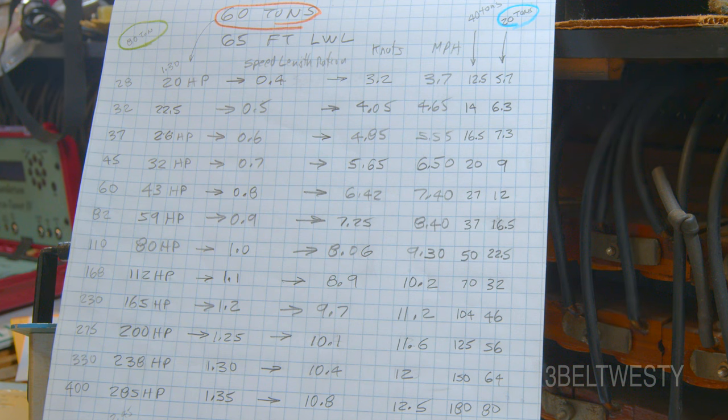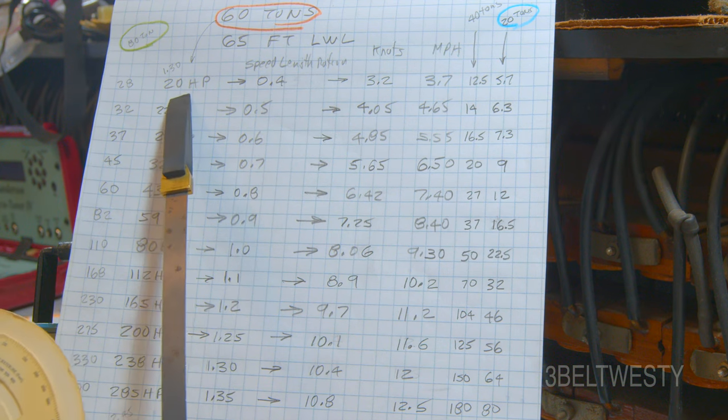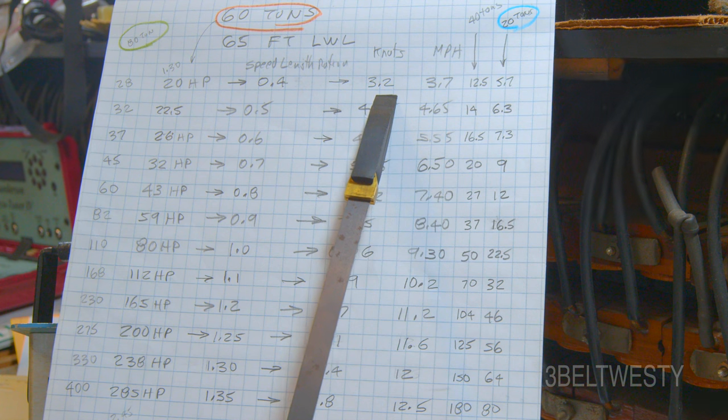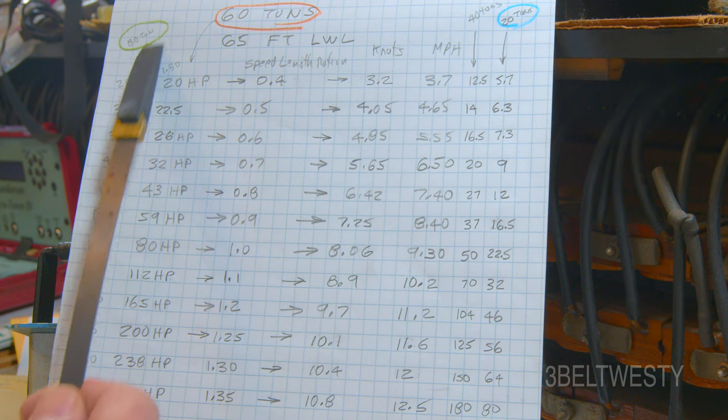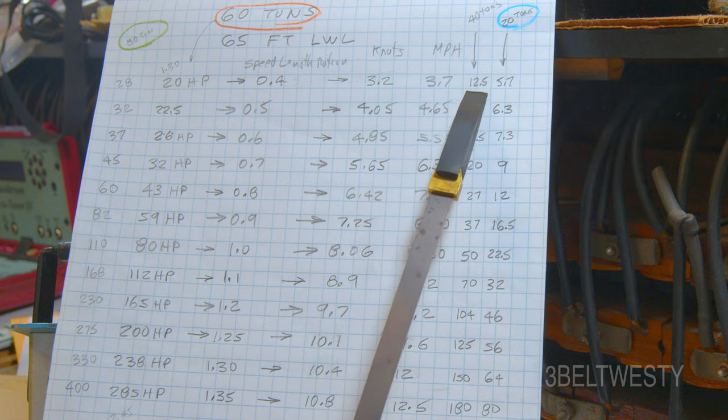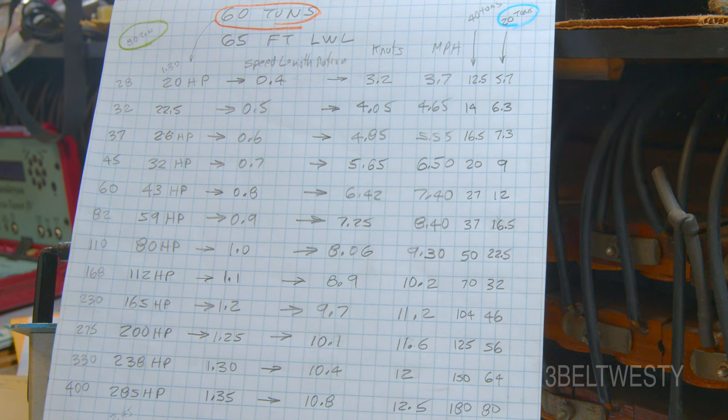Okay, here real quickly, this is the data I got from the slide rule, the circular slide rule. I went ahead and I lined up the speed length ratio versus horsepower and you get the speed in knots, and then here's the different horsepower: 20, 28, 12 and a half, 5.7 for the different amount of tons. That's what I plotted on the curves.